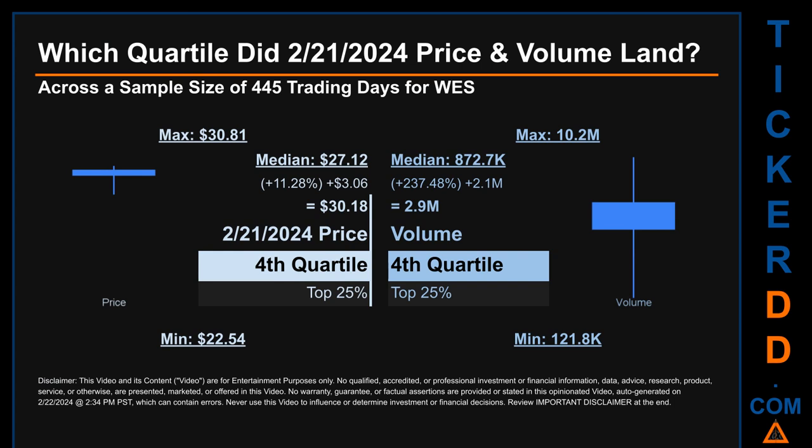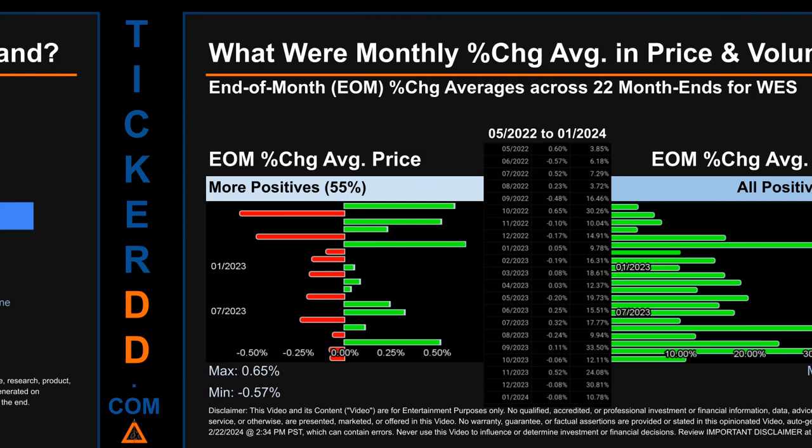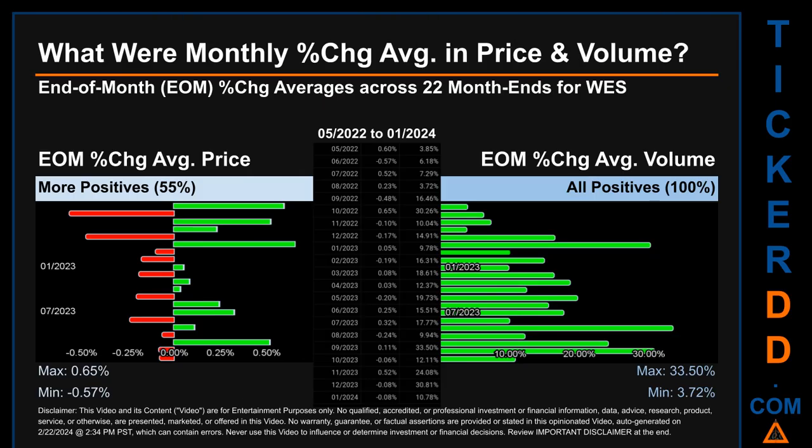The day's volume also landed within the fourth quartile, marking it within the top 25% of all sampled daily volume, which saw a max daily volume of 10.2 million and a minimum of 121.8 thousand. Quartiles tell us about the spread of a data set by breaking it into quarters, just like how the median breaks the set in half. Descriptively, WES has a median price of $27.12; therefore, February 21st, 2024's price was higher from that middle marker by 11.28%. The day's volume of 2.9 million was more than the median by 237.48%.